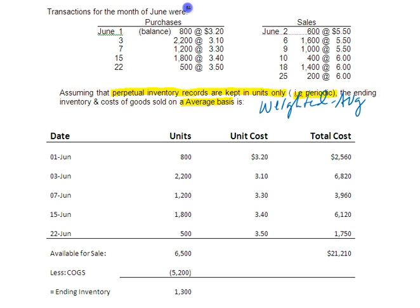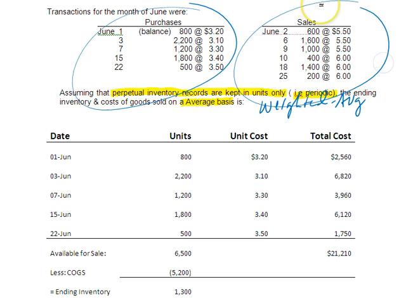So this is the information given to us — the purchases and the sales. When we're doing periodic, we don't pay attention to the date of the sales. We assume that all of the items that were available — everything available for sale — could have been sold. And then what I do is go and create this table.